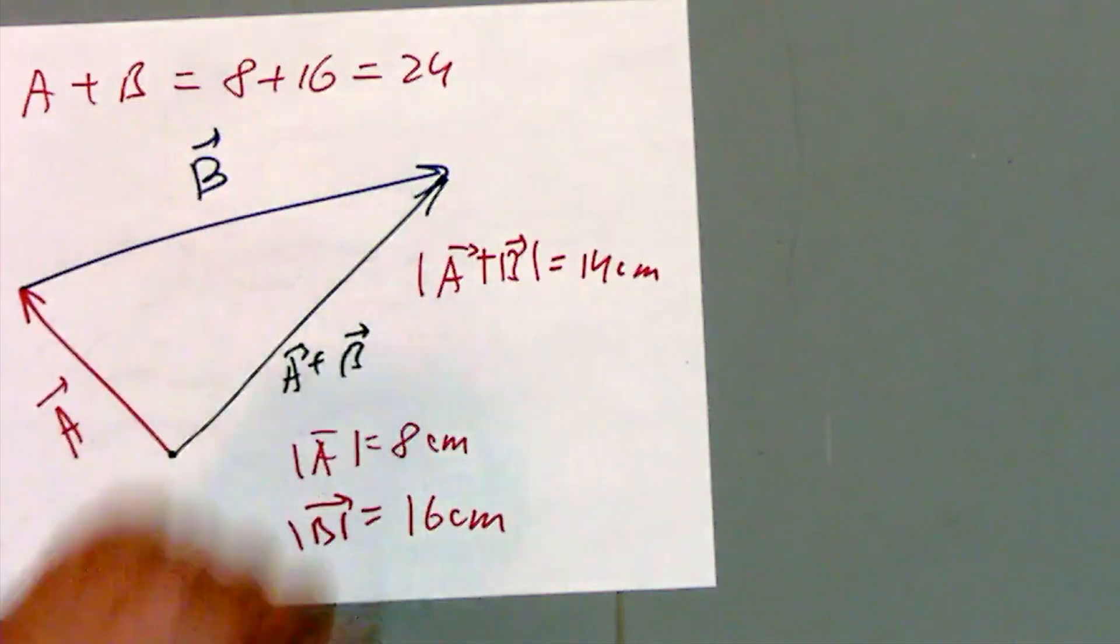So what does this mean? Well, it depends on how you call it. If you say vector A plus B equals 24, you lose a point on an exam, it's wrong.